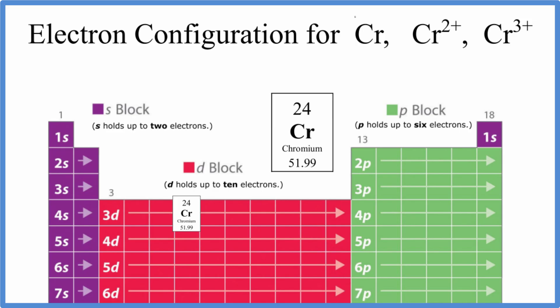So let's start with 1s, and s can hold up to 2: 1s1, 1s2. Then we go to 2s2. Next is 2p. P can hold up to 6, so we put our 6 there. Then 3s2, 3p6.